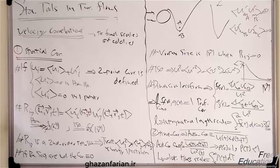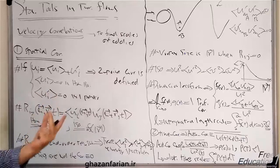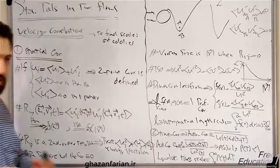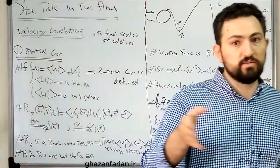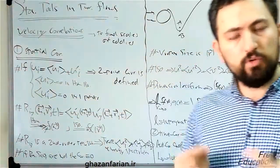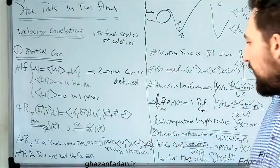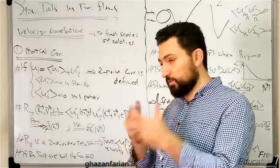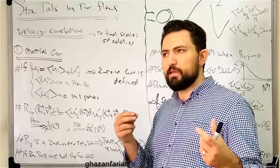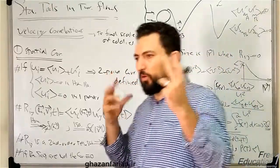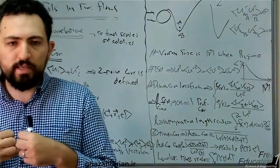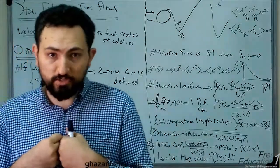There is an extra point: if the random samples here — the velocities of these two points — are statistically independent, the result of this correlation should be zero. So if you have two distinct points in space and you compute this tensor, if the result is zero, it means that from a physical viewpoint they don't have a relation; they are not correlated to each other.